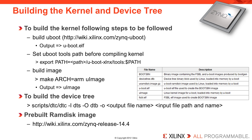The device tree is created using a process by which the Linux kernel initializes itself based on the hardware platform. The device tree allows a single kernel image to run on multiple hardware platforms. A device tree file named with a .dts extension is a text file that describes the hardware platform. It is compiled into a device tree blob with the extension .dtb, which is loaded into memory before the Linux kernel is started. The Linux kernel then uses that device tree blob to initialize itself at runtime.